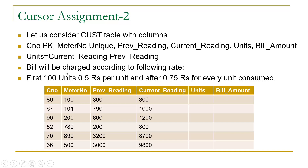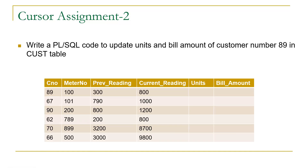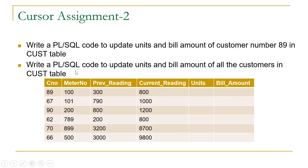According to this formula you have to calculate the bill amount. At present we have data in four columns, and you need to populate units and bill amount. In the first problem statement, you have to write a PL/SQL code to update units and bill amount for customer number 89 — calculate the values and store them to update that record.